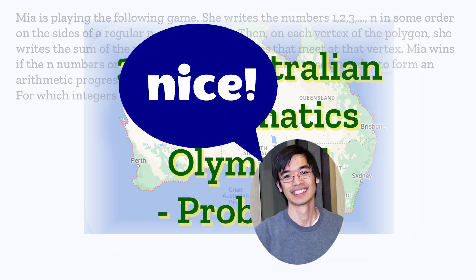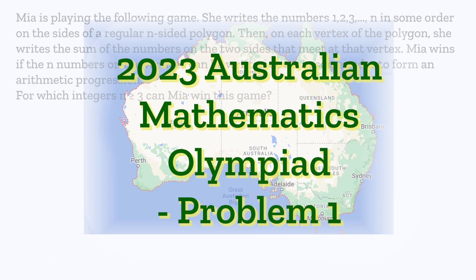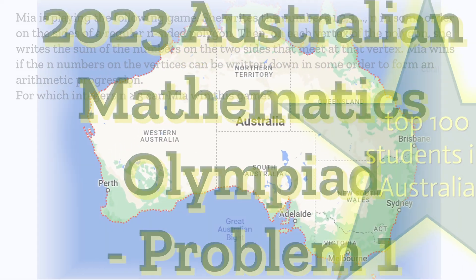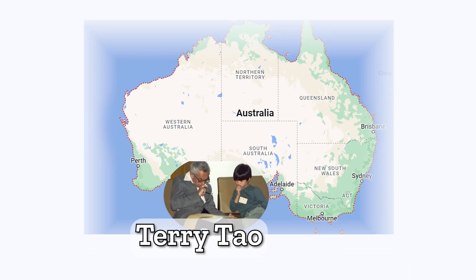This is a nice problem from the 2023 Australian Mathematics Olympiad. As it's our National Olympiad, only about the top 100 students in Australia are invited to compete.